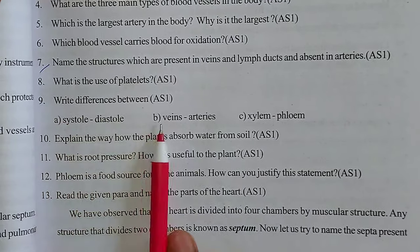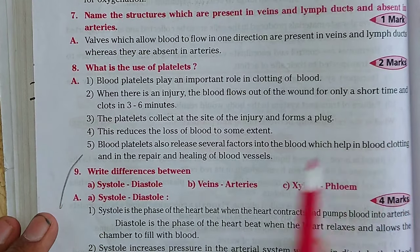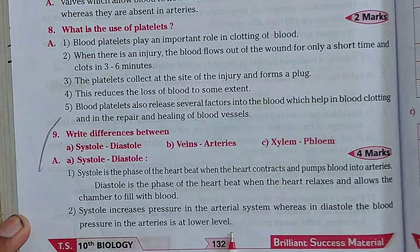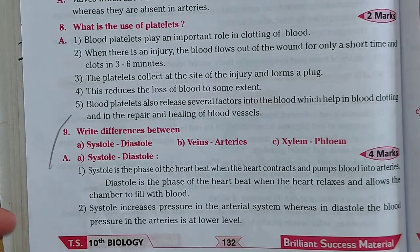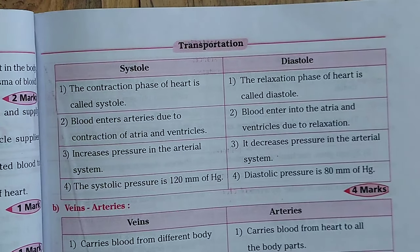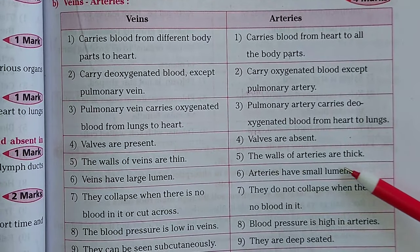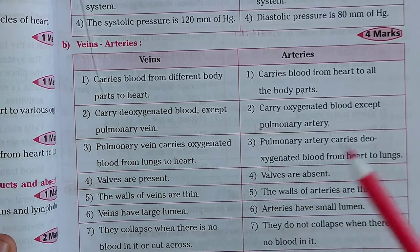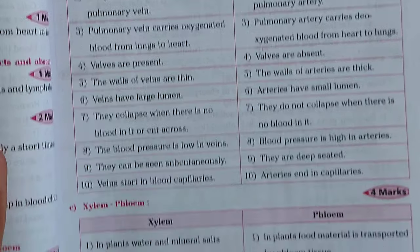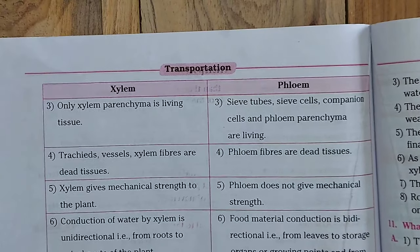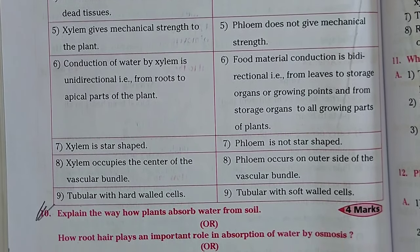Let's move to the ninth question. Guys, you can see the ninth question in the textbook. Now we will see the ninth question answer in Question Bank. You can see the ninth question and ninth question answer — it is continuously moving to the next page. We have a table: the A1 table, after that the B1 table. We have B1 and like this we have a table with a total of 10 points. After that we have C1, and the C1 table has a total of nine points.